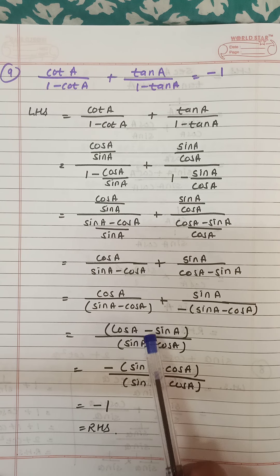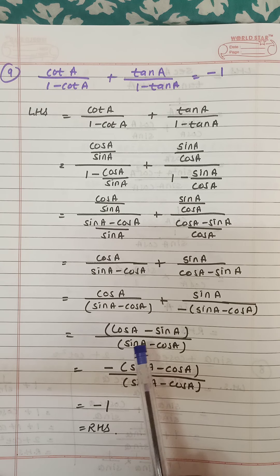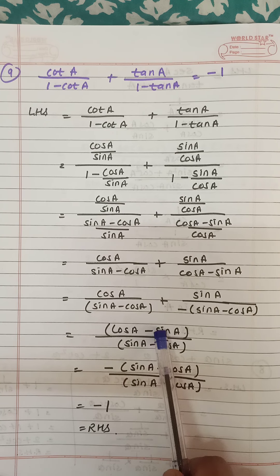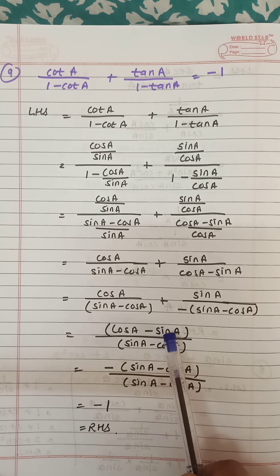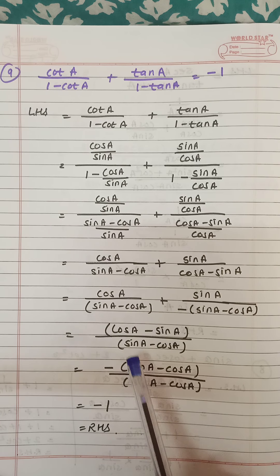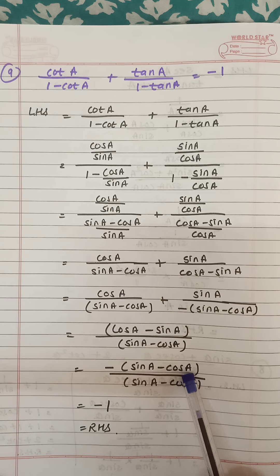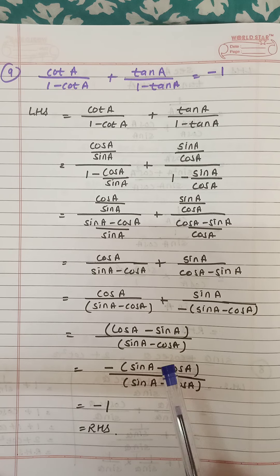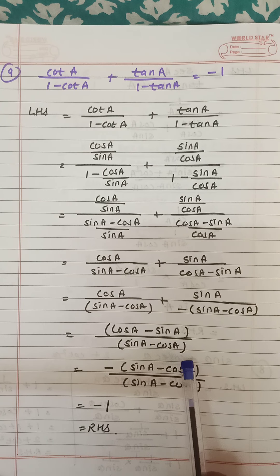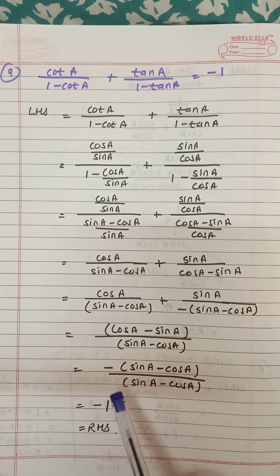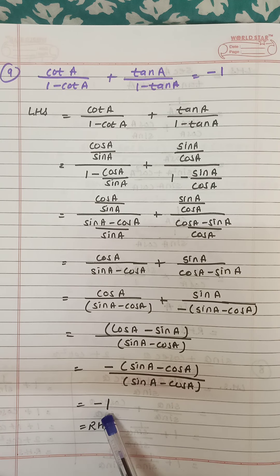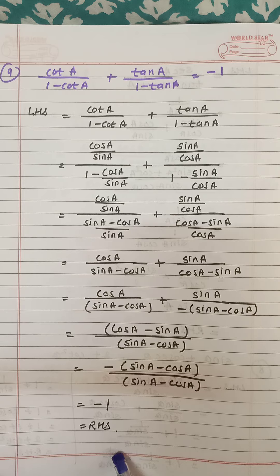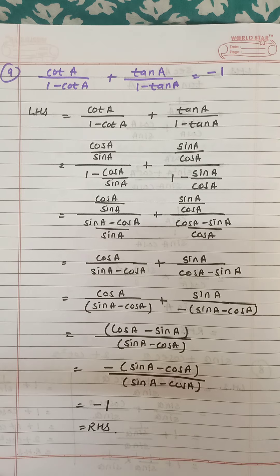This is also the same with a negative sign, so if we remove the minus outside it becomes sin a and this cos a becomes minus. So this gets cancelled, leaving minus 1, which equals the right hand side.